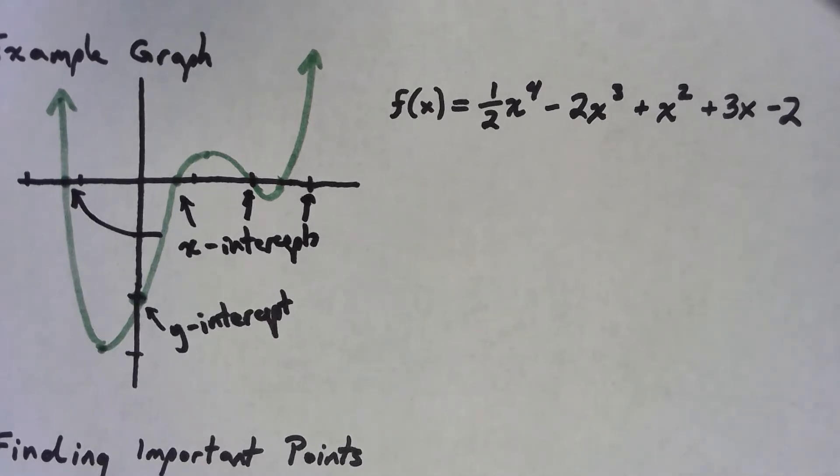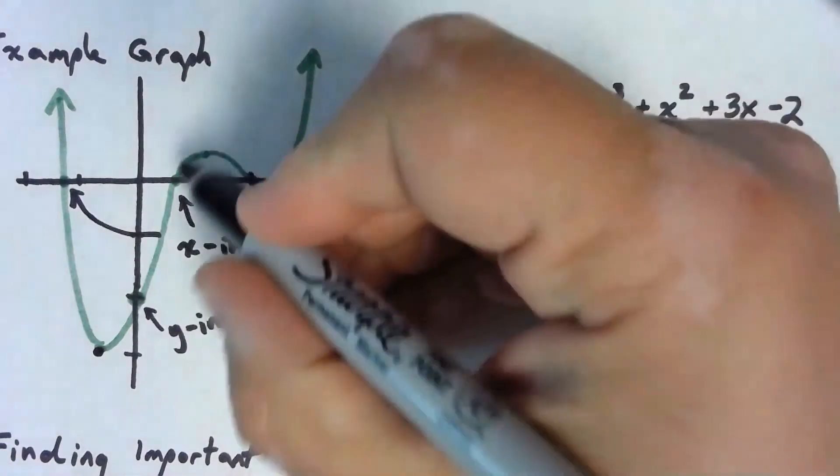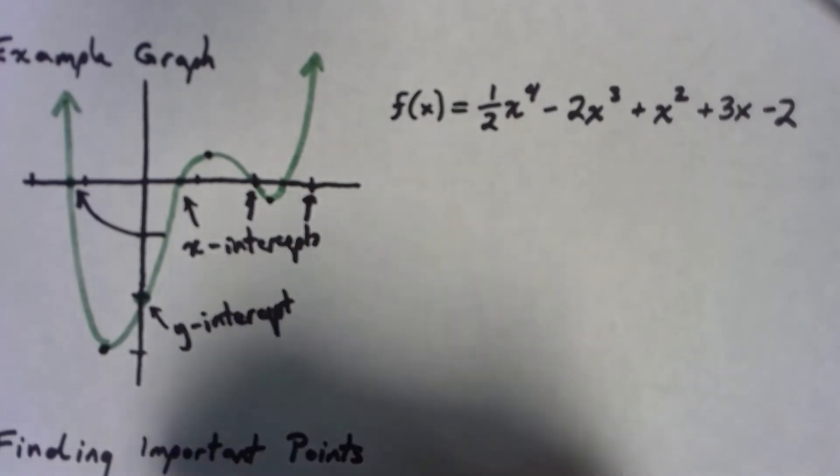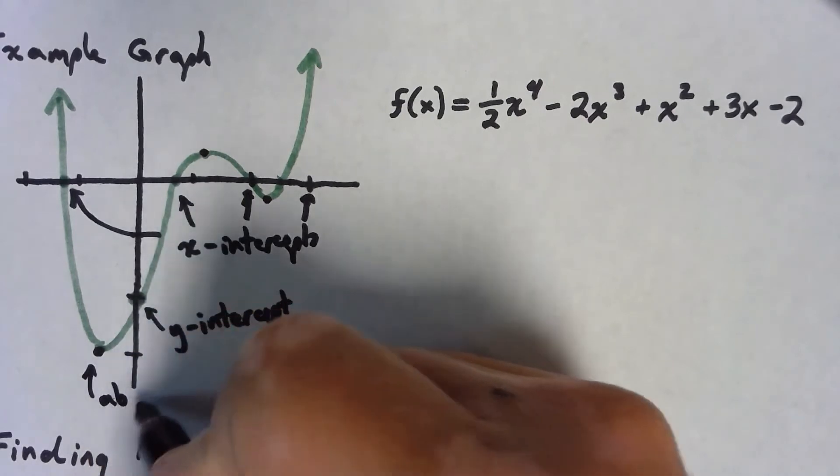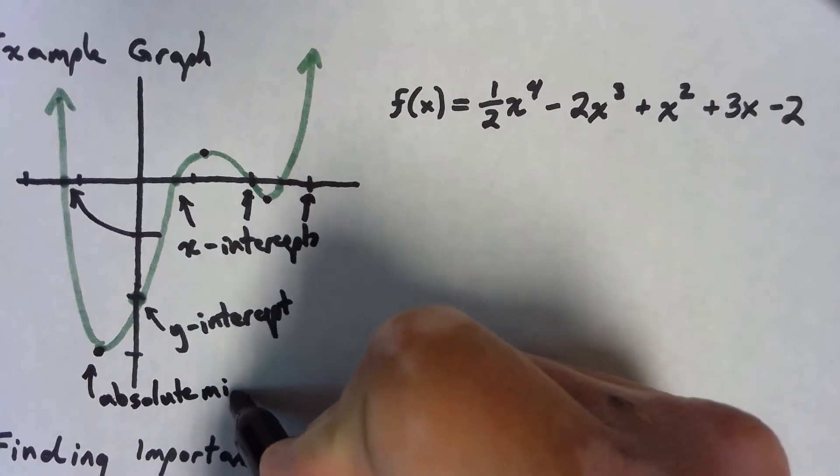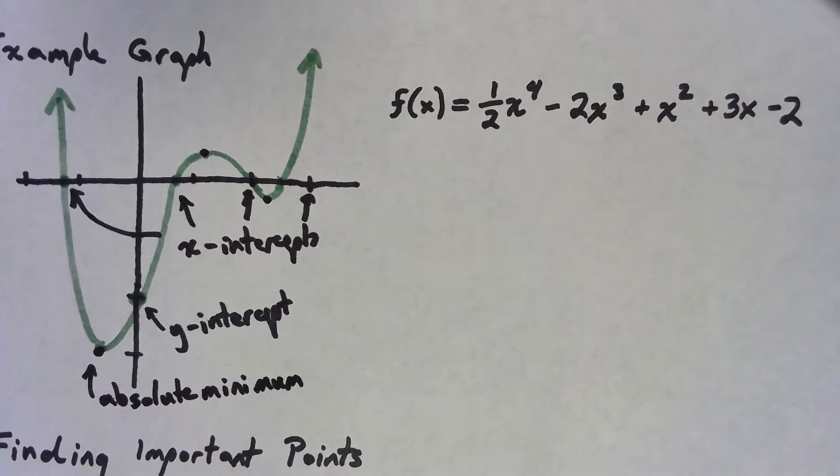Finally, we've got the points where it sort of turns around. We've got this point down here, this point right here and this point there. This one at the bottom is what we call the absolute minimum. It's the lowest the function ever gets, the absolutely lowest y value this graph ever has.